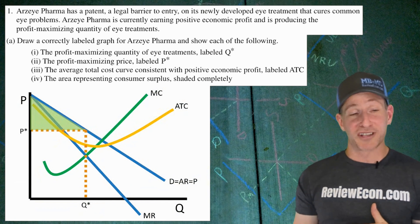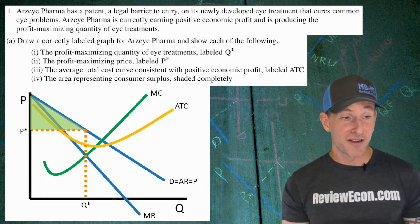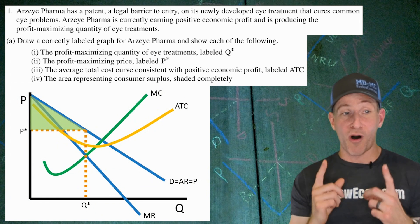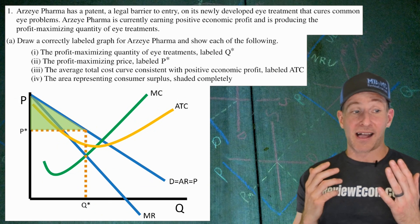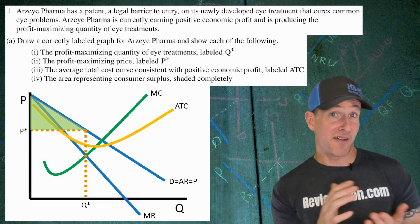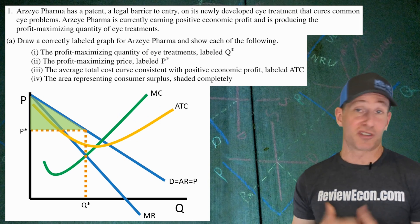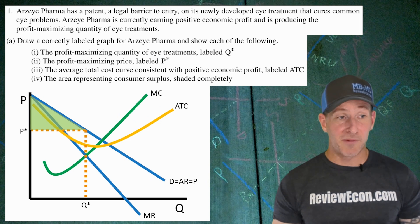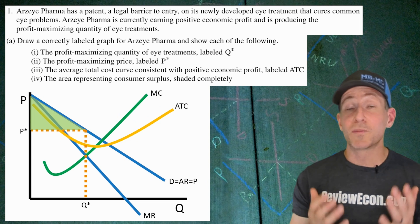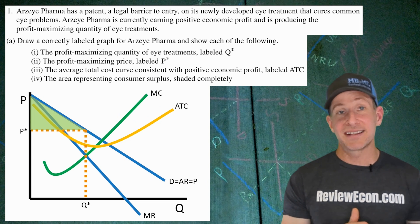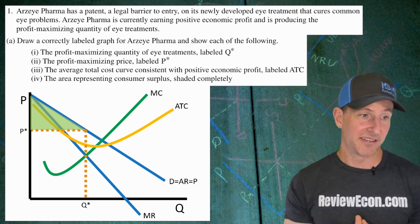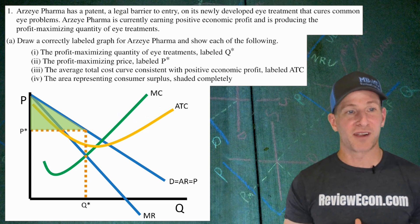We have the downward-sloping demand curve, with marginal revenue below that demand curve. We've got our MR equals MC quantity, and then we price all the way up to the demand curve. The average total cost curve is below the demand curve at the profit-maximizing quantity, showing that it is earning positive economic profit. We also have to shade in the consumer surplus — it's from the price up to the demand curve, creating that triangle right there.